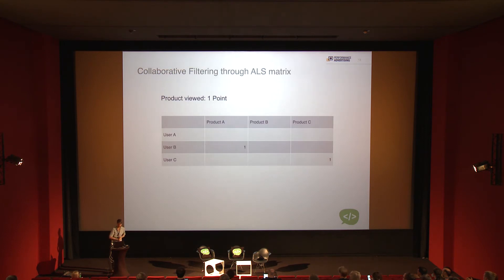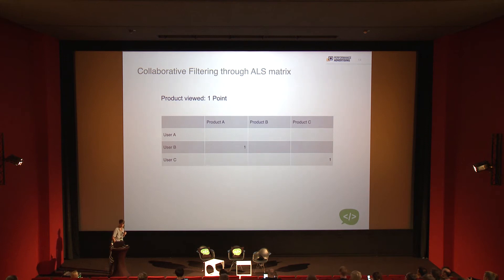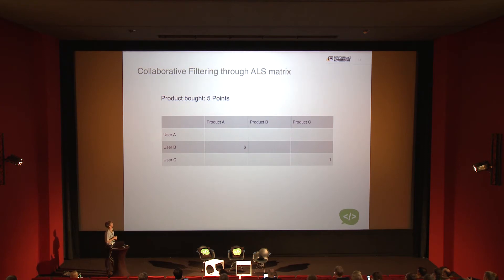Let's have a look at ALS — alternating least squares. Sounds scary. How it works: you have a matrix with products A to C across the top and users down the left side, and you give scores. For example, user B viewed product A — give them one point. If user B bought product A, that gives five points, because buying expresses more desire than just viewing. You can also give negative points if a user removed something from a wish list or disliked it.